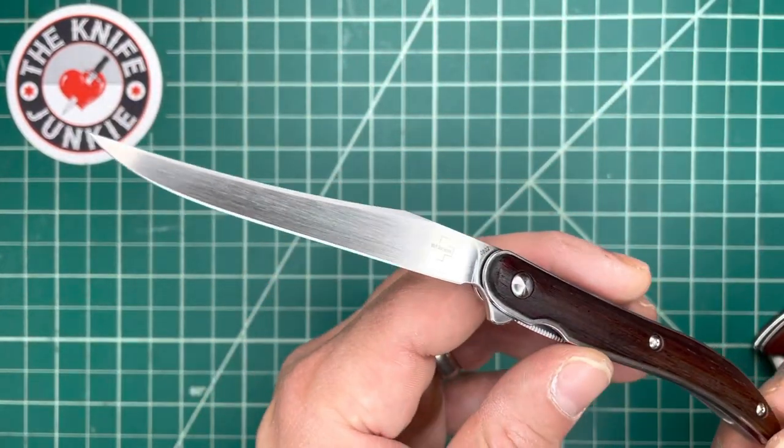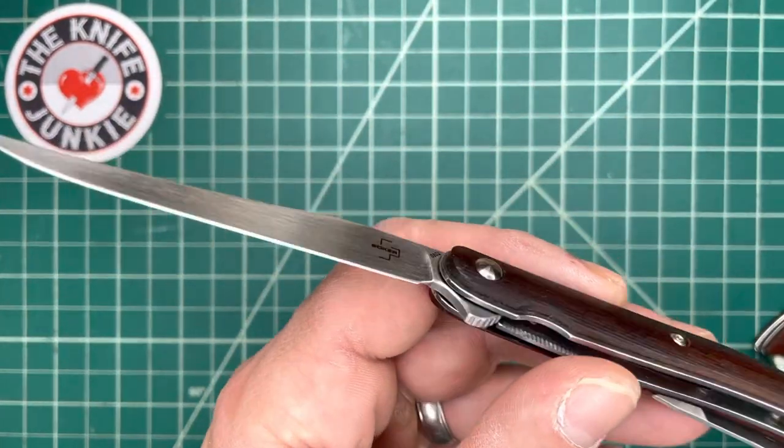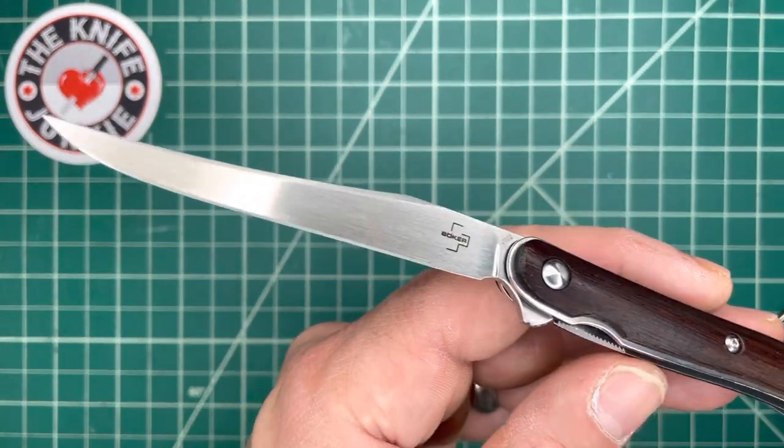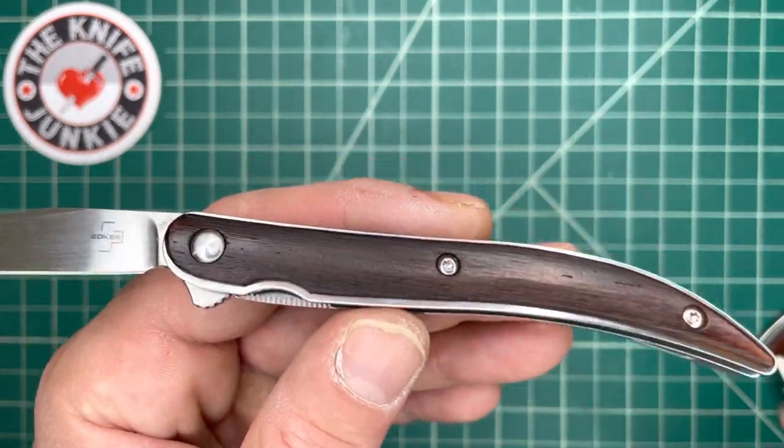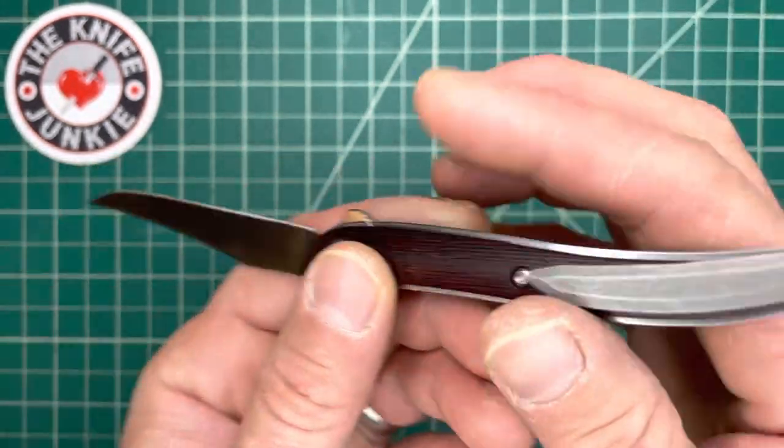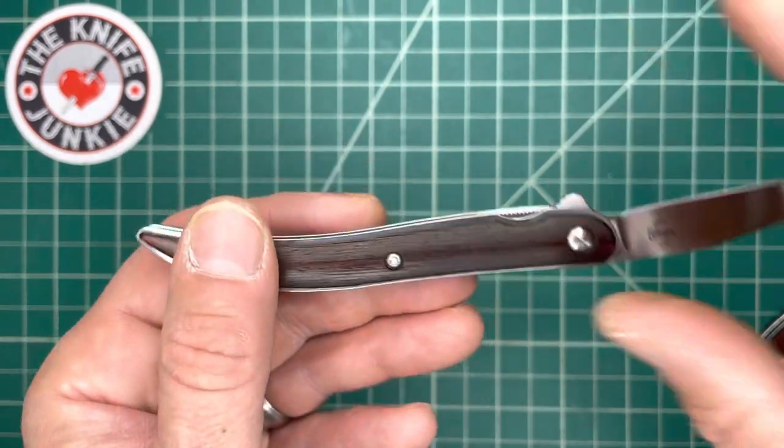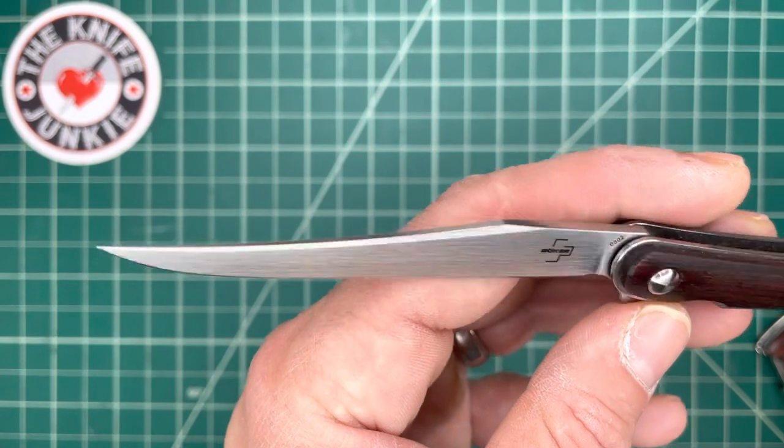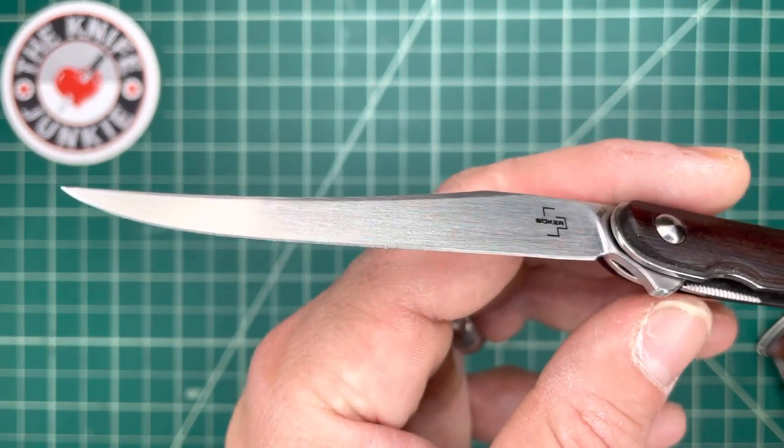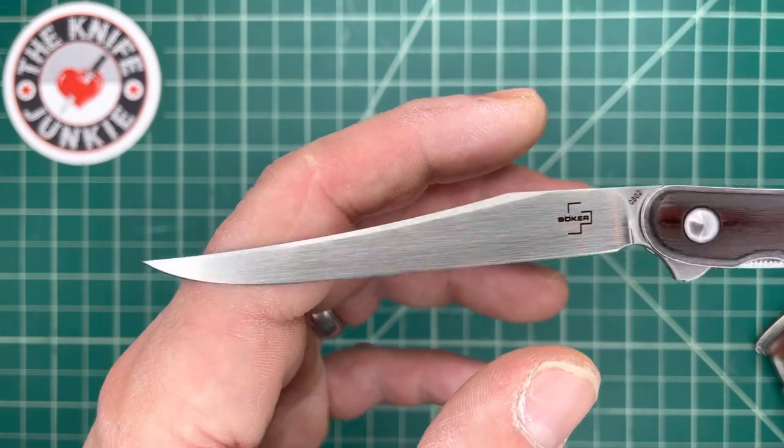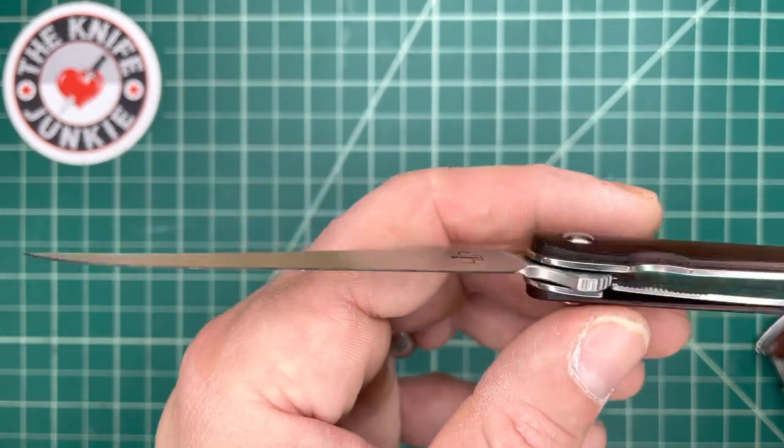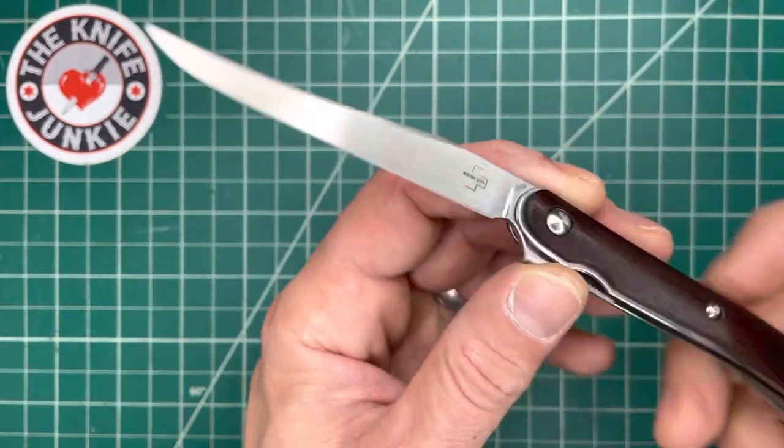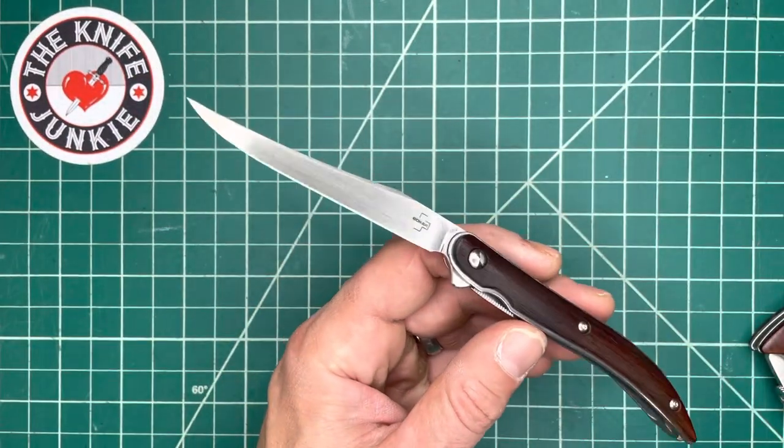This is the Boker Plus Texas Toothpick, a modern-day liner lock folder modeled after the traditional slip joint pattern Texas Toothpick, which has a long horn-shaped, curved like a steer horn-shaped handle, and then a long slender California clip or Turkish clip point blade, or sometimes it's called the muskrat clip, but a long slender clip point blade that is not called a Texas clip point blade, is in the Texas Toothpick, traditionally. That was difficult.